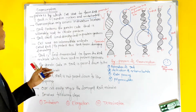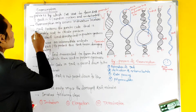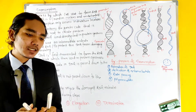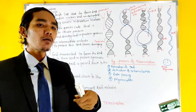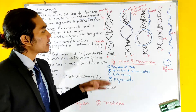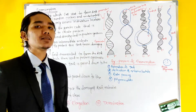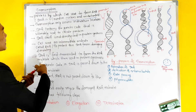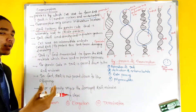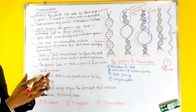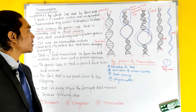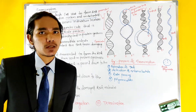DNA contains a genetic code that is ultimately used to create protein. We can create protein through protein synthesis. DNA itself is not directly involved in protein synthesis — DNA is not directly involved in protein synthesis.